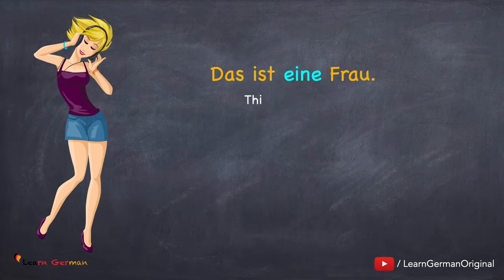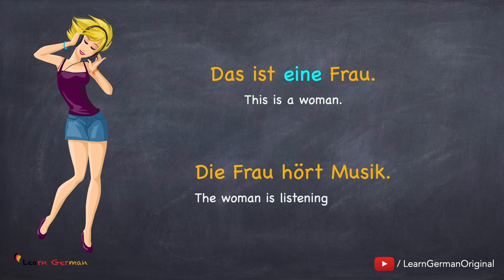Let's look at the next sentence. Das ist eine Frau. Die Frau hört Musik. In the first sentence we are not talking about any particular woman, hence we use the article eine. But in the second sentence we are talking about the same woman from the first sentence, hence we use the article die. When the bestimmte article is die, then the unbestimmte article is eine.